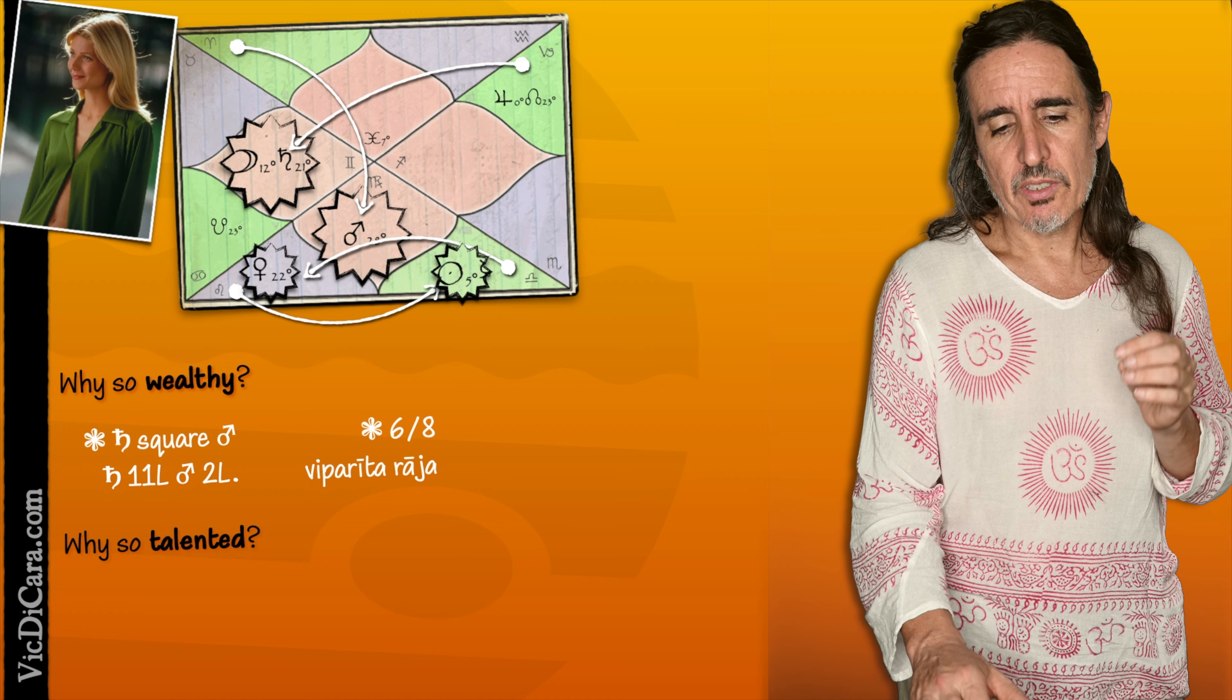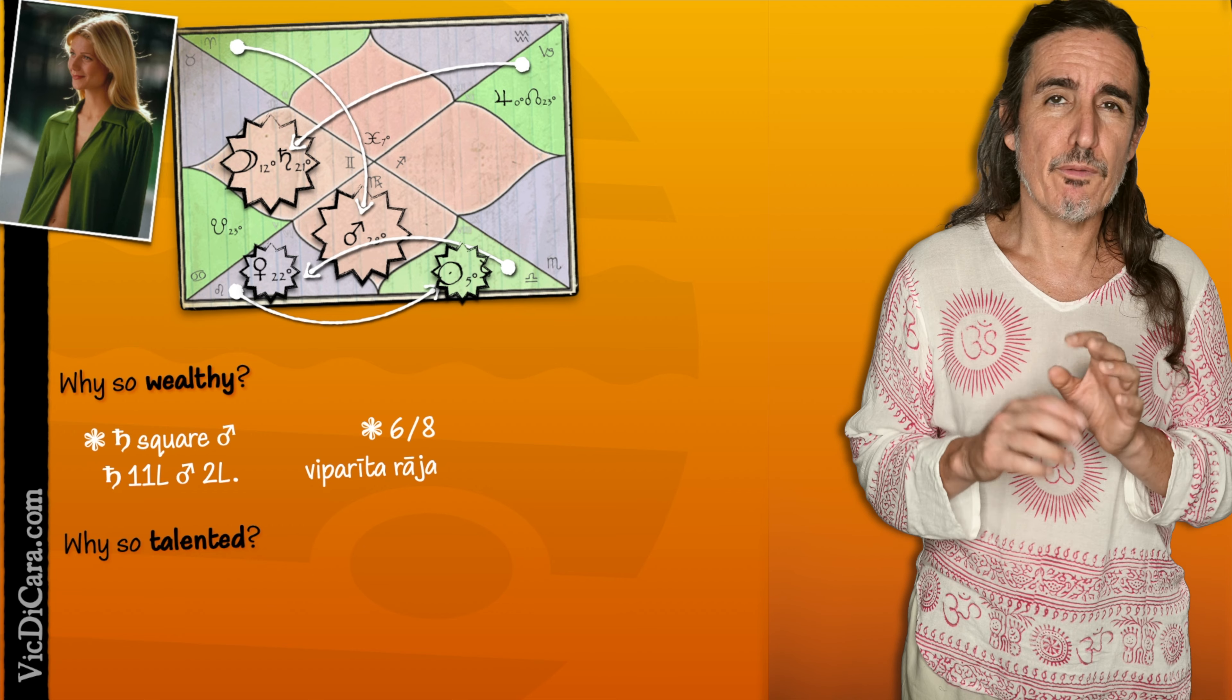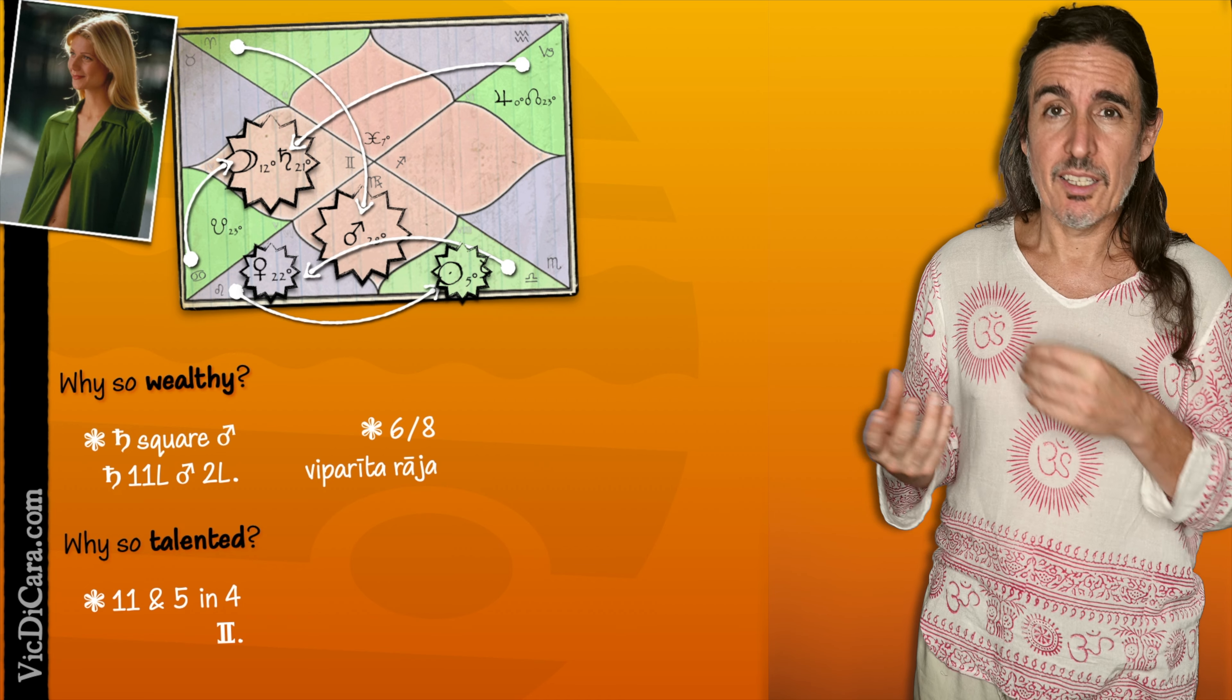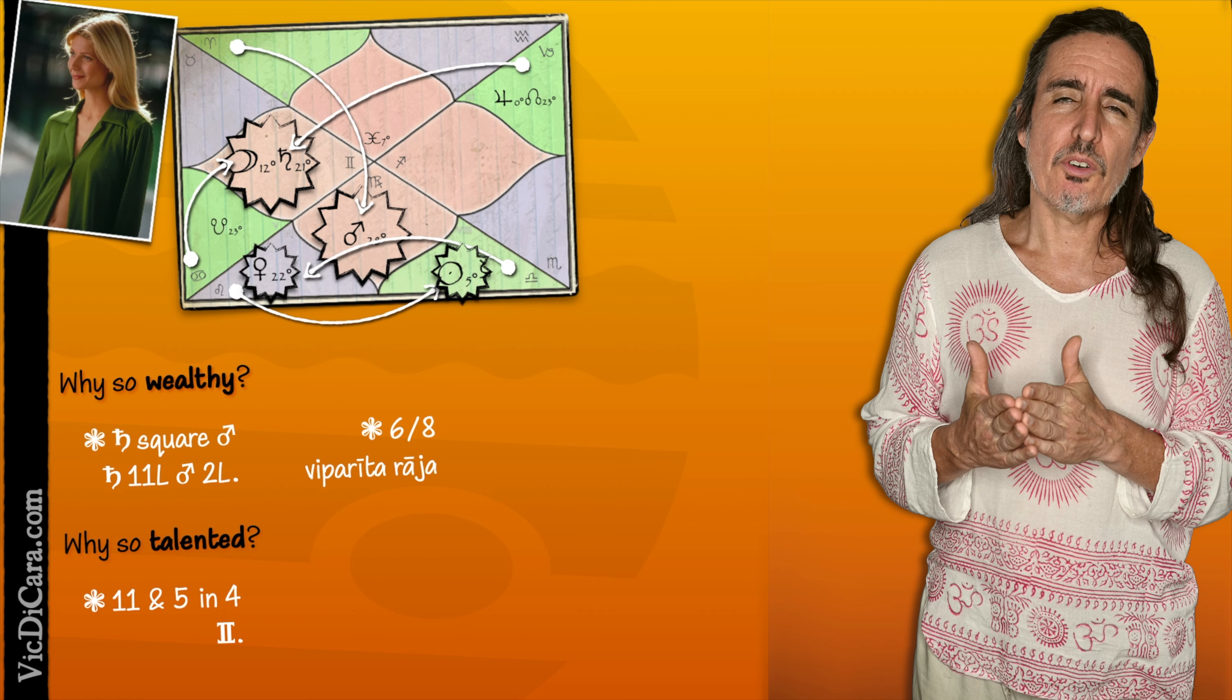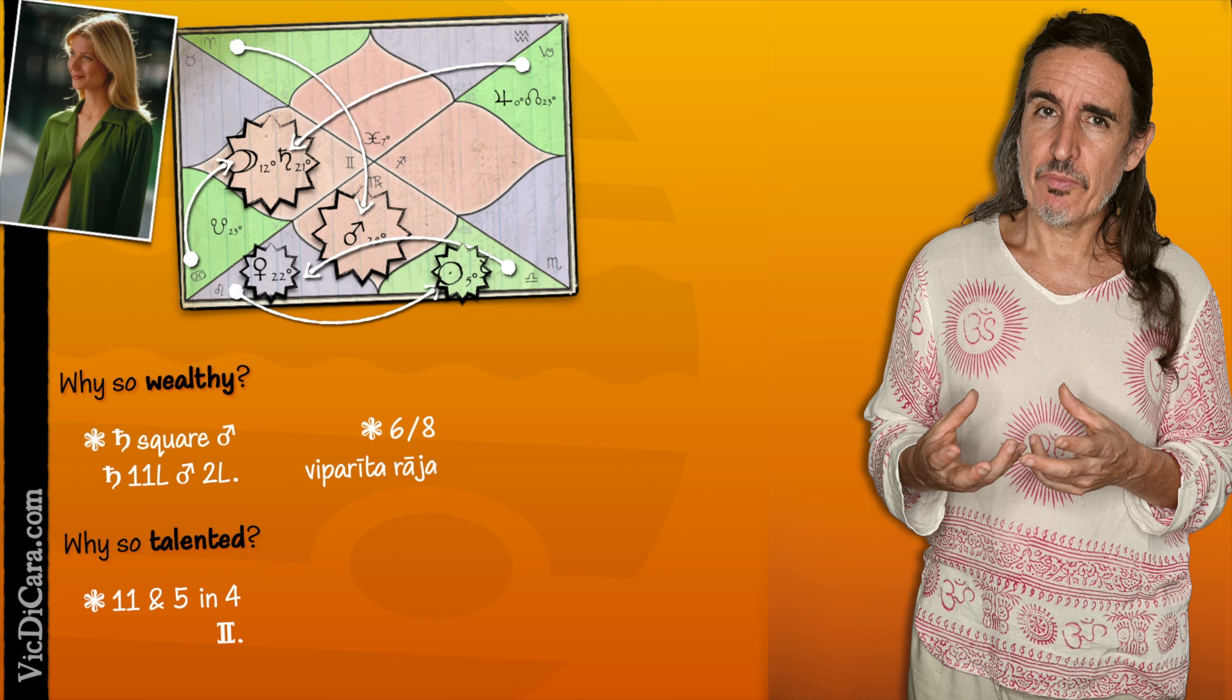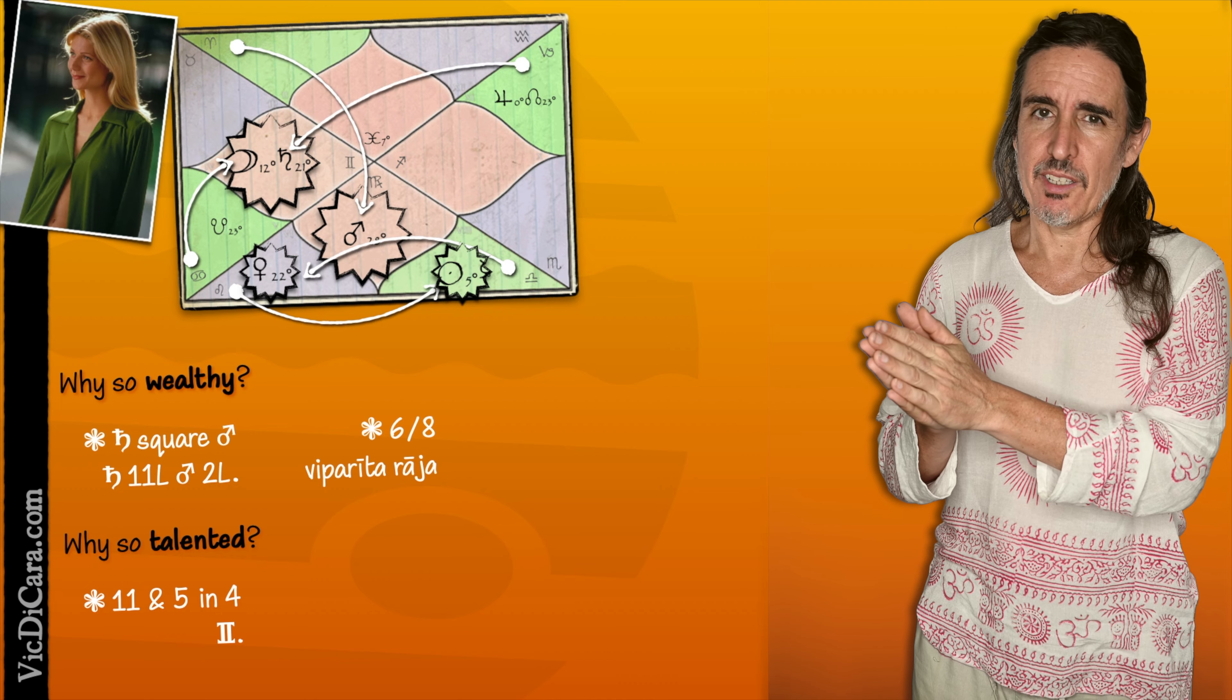So in Gwyneth Paltrow's case, she has the 11th Lord and the fifth Lord joining the fourth house in Gemini. The 11th Lord is for talent in performance. The fifth Lord is for artistic creativity. They're joining in the fourth house of emotion in Gemini, the sign that really aids communication and expression. And that is going along with Jupiter in Capricorn in the 11th house.